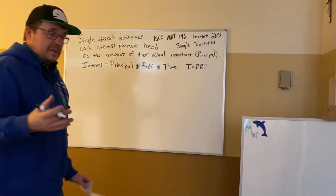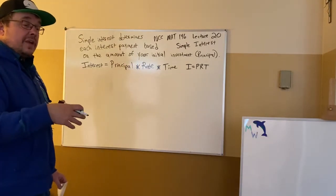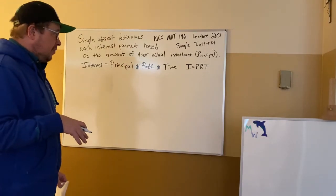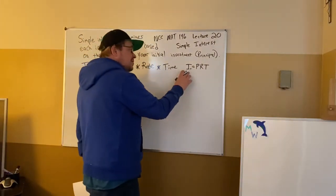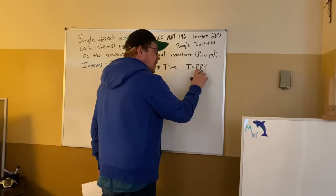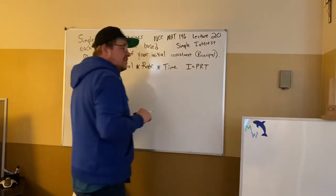So then we come out of here with I equals PRT. Now I want to show you using division how we can isolate each of these individual variables. So we'll get other formulas, but this is what it's based on.